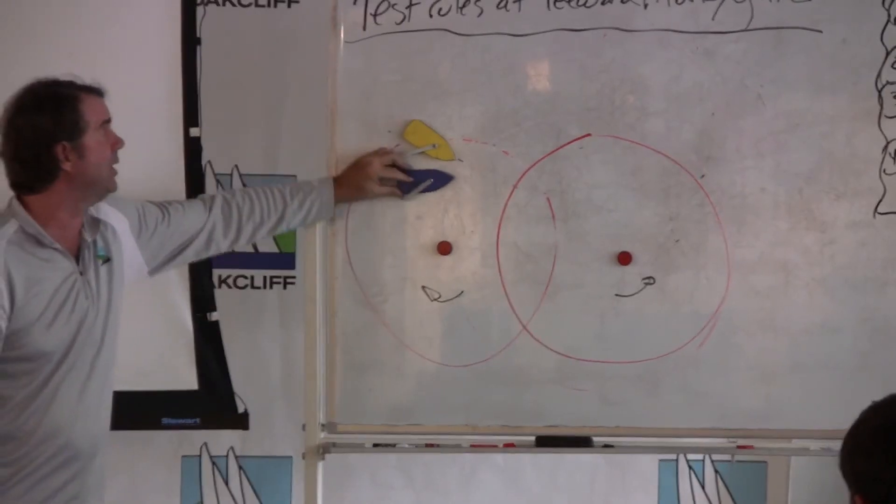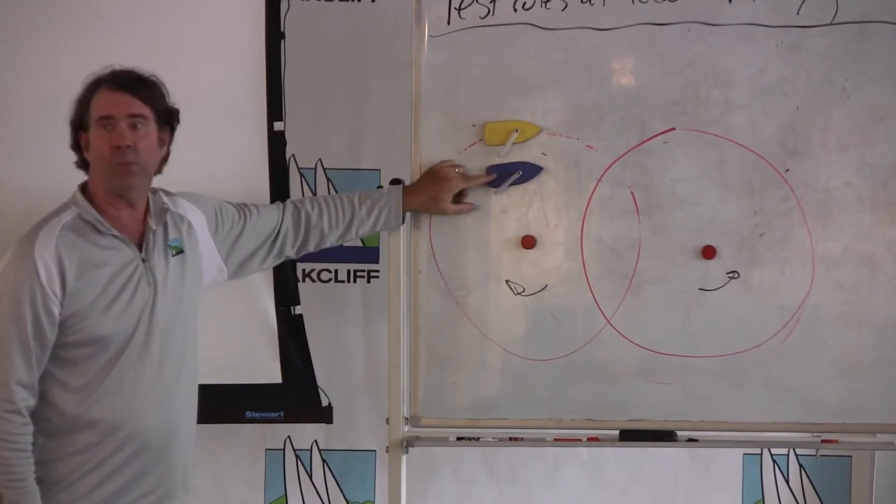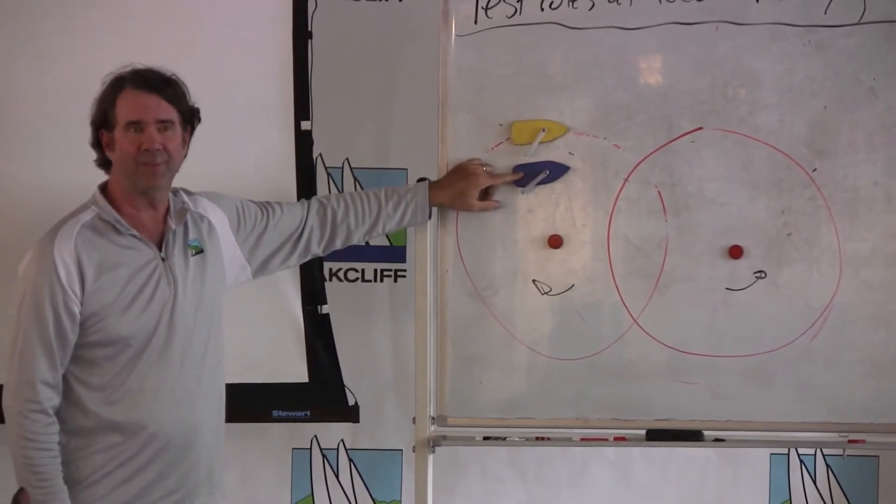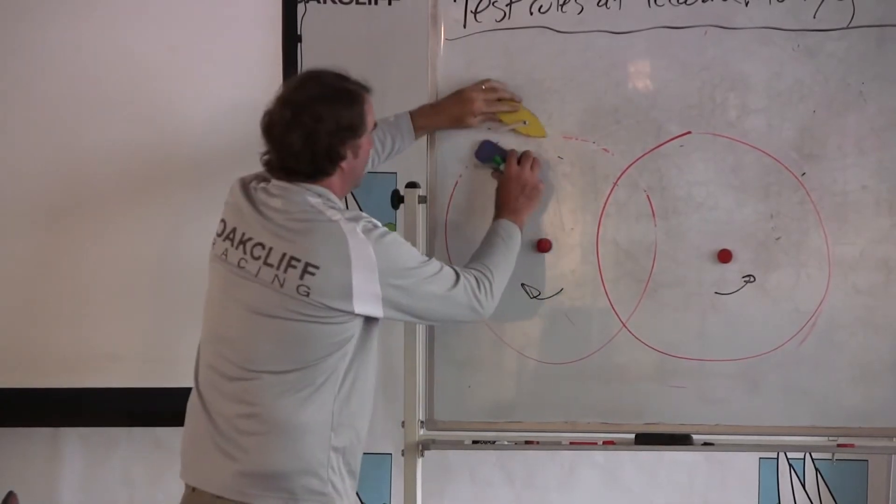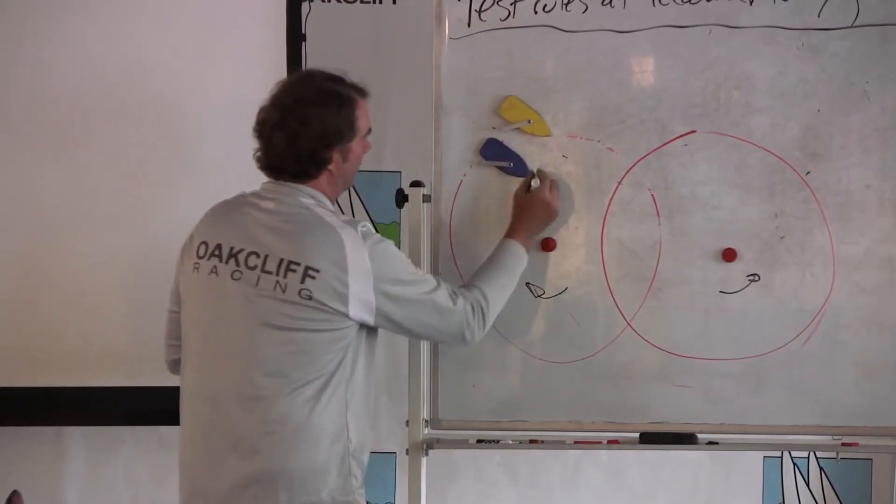So right now, she could luff yellow. Rule 16 would apply, and she wouldn't be protected because she's sailing away from her proper course. Her proper course at this mark would be something like that.